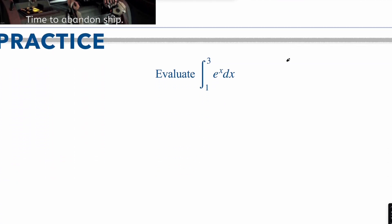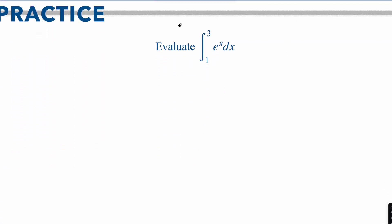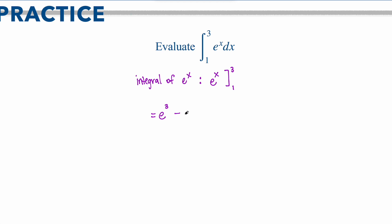For example, I'm going to take the integral of e to the x, and then I'm going to input 3 and 1. The integral of e to the x is e to the x, because if you were to take the derivative of e to the x, you actually get e to the x. Now I'm going to plug in 3 and plug in 1. So my answer is going to be e to the 3rd minus e to the 1st, and putting that into your calculator gives me 17.367.